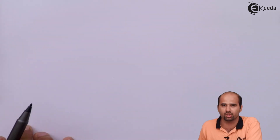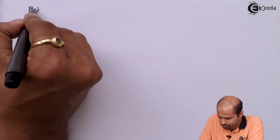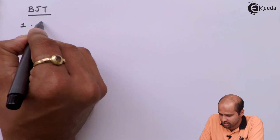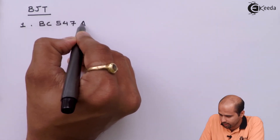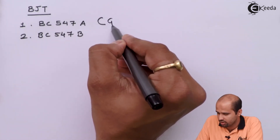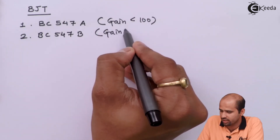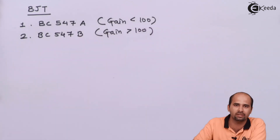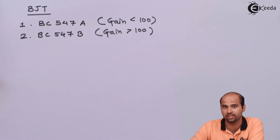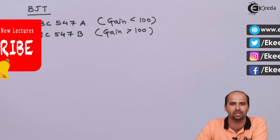Now coming to the practical things of BJT. We will be having two BJTs in your syllabus: BC547A and BC547B. BC547A gives a gain greater than 100. What gain means we will learn in the next upcoming video. Right now we have learned the BJT introduction, and in upcoming videos we will learn the working and construction. So stay tuned, learn more and more about ADC along with Ekeda videos. Thank you so much.